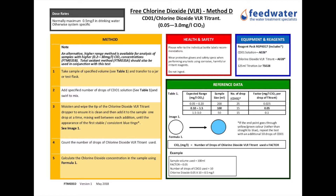Alternative methods are available for detection of free chlorine dioxide in water including photometric and electrochemical. Test selection depends on cost, accuracy required, complexity of the method, and ultimately suitability for your specific application. Your feedwater rep can help you choose the most suitable method.